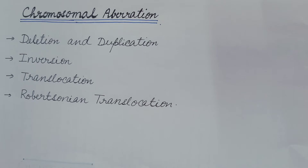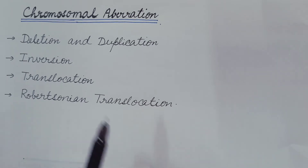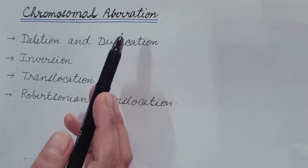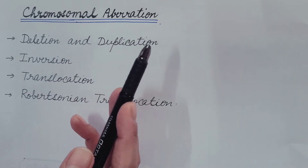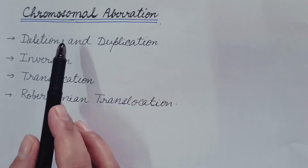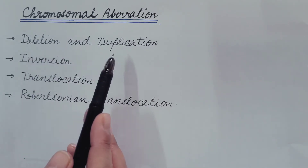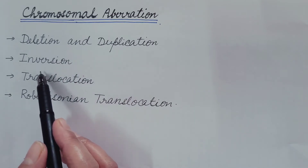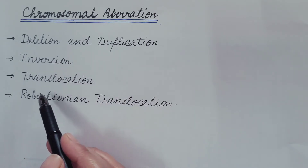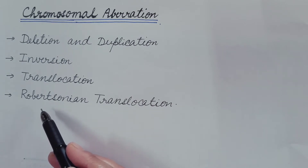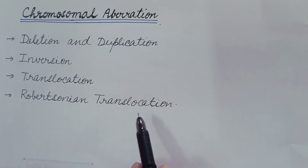Hello friends. In the last few videos we discussed about chromosomal aberration, which is the change in structure of chromosome. We discussed types of chromosomal aberration, including deletion, duplication, inversion, and translocation. You can refer those videos — the link is given in the description box. Today we are going to discuss about Robertsonian translocation.